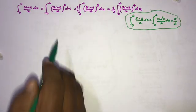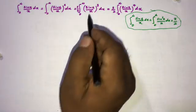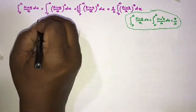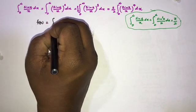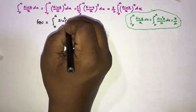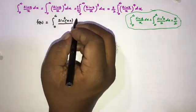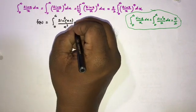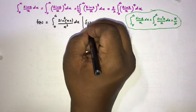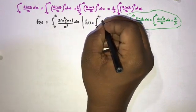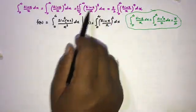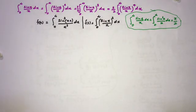Now we have the integral from zero to infinity of (sin(x)/x)³. I am going to define a function: let f(a) = ∫₀^∞ (sin(ax))³ / x³ dx. Then if we plug in a = 1, f(1) = ∫₀^∞ (sin(x)/x)³ dx, which is our original integral.